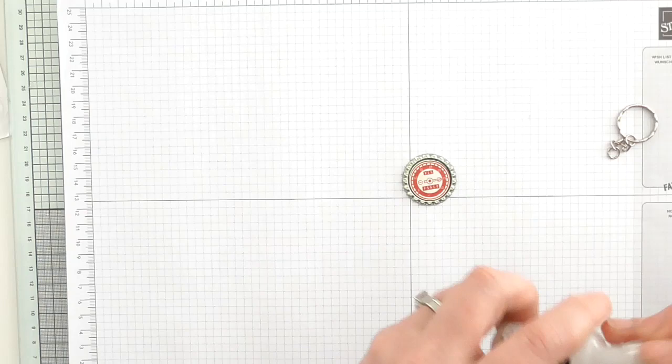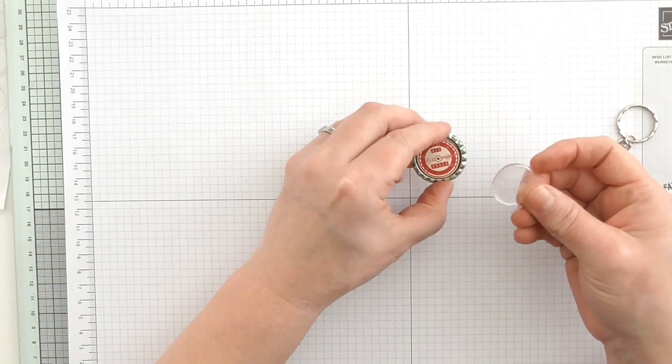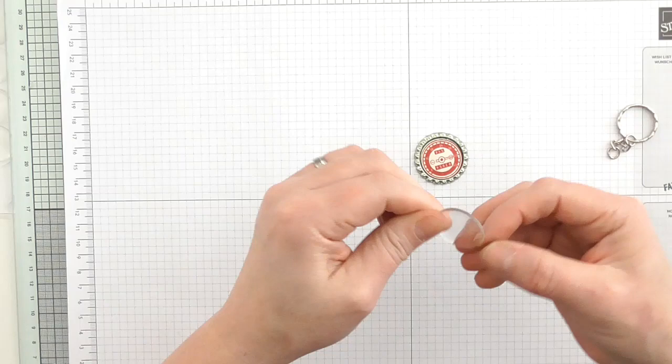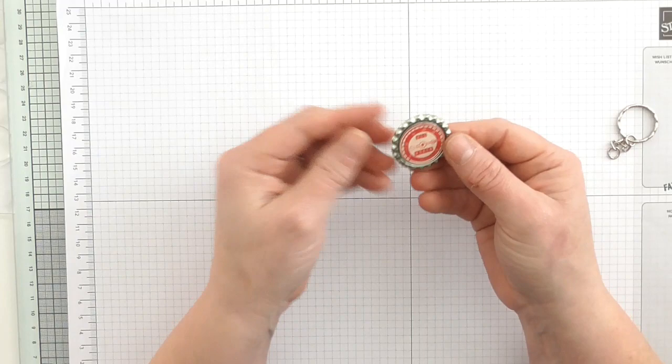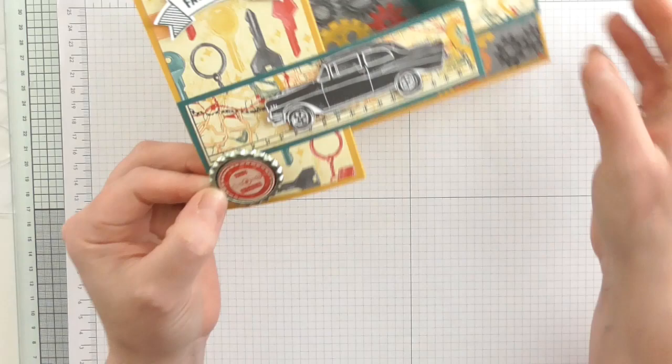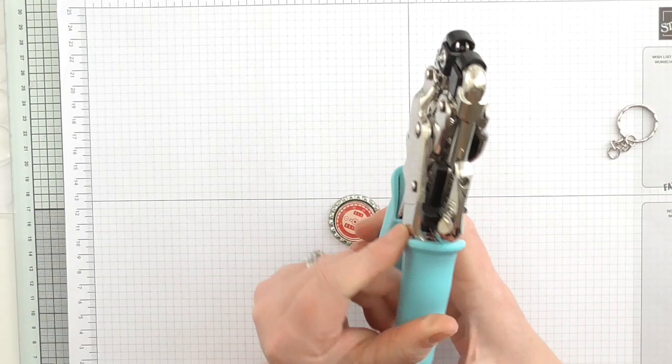You can use Glossy Accents to cover over the top. I'm not very good at doing that technique, I make a mess of it. So what I always have to hand are these epoxy domes. You can pick these up pretty cheap on Amazon. I've had these in my crafty stash for about a billion years. You just bob one of those over the top and you do need to wait for that Glossy Accents to dry.